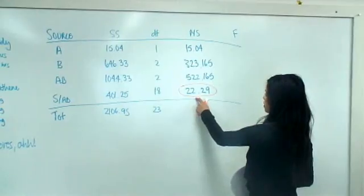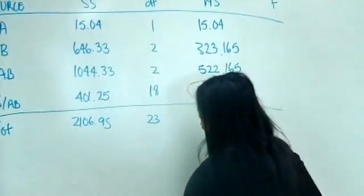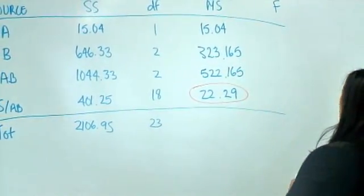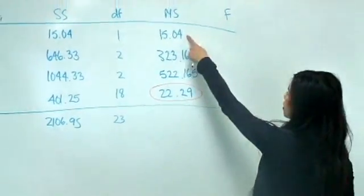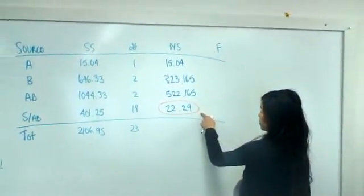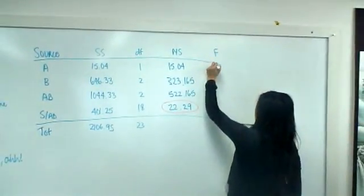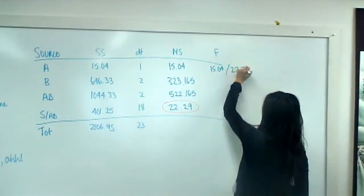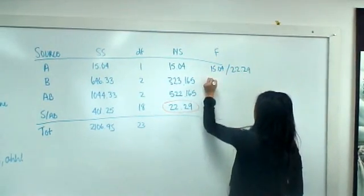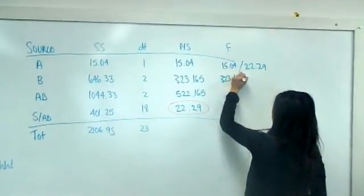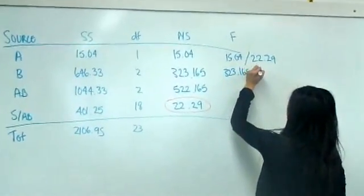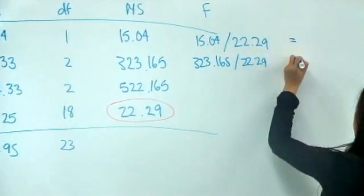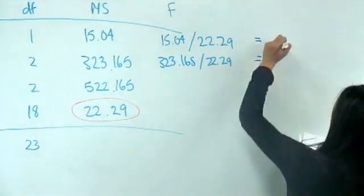Make sure to keep in mind that MS within is our error term. Our F values are just each MS term divided by MS within. So F for A is 15.04 divided by 22.29, F for B is 323.165 divided by 22.29, and the same for the interaction term. From these you get your F values.